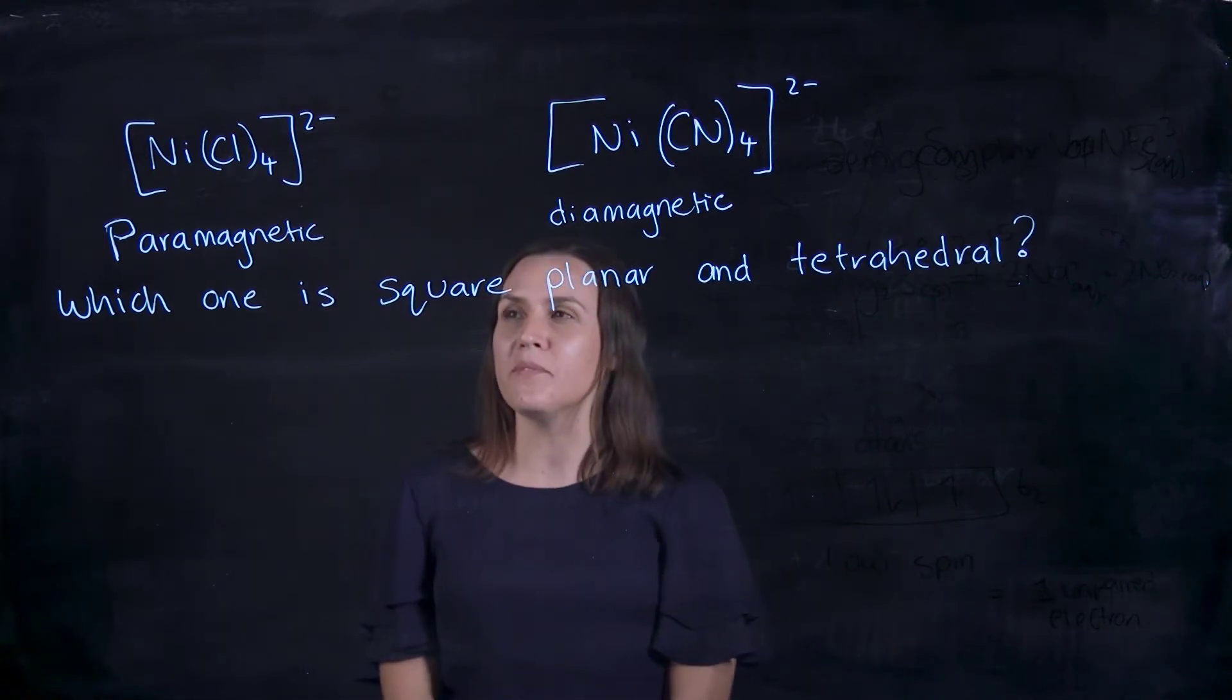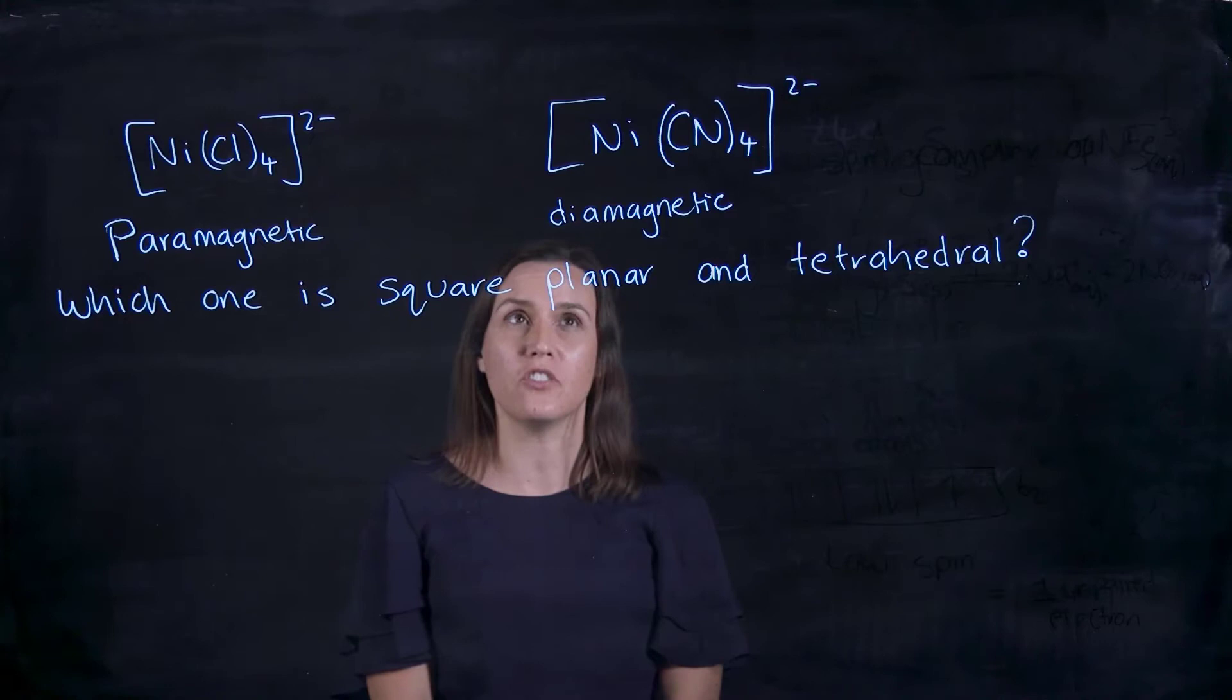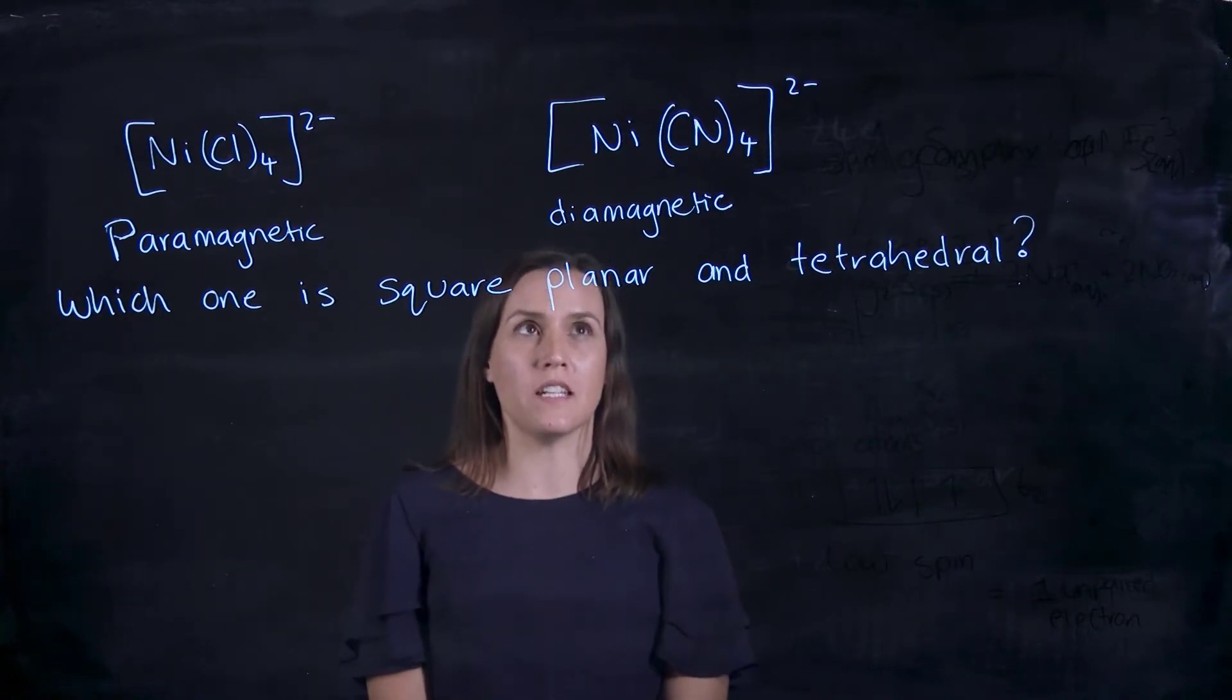Welcome back. Today we're talking about transition metals. We have two nickel complexes: one is paramagnetic with chlorides attached, and the other is diamagnetic with CN (cyano) groups attached.